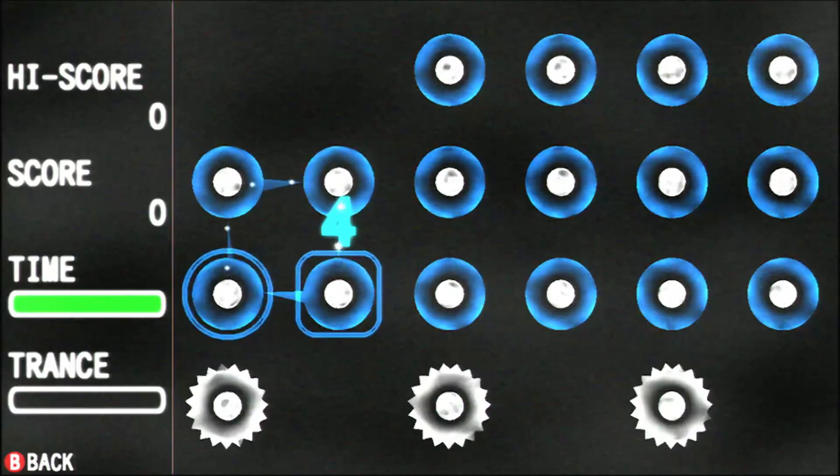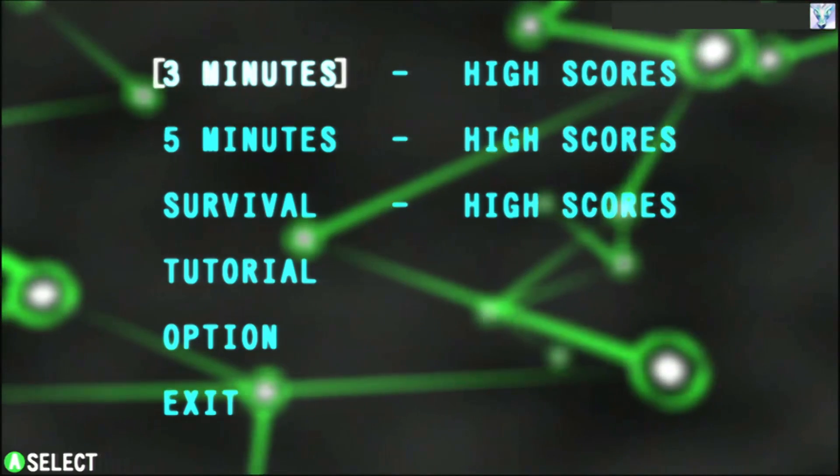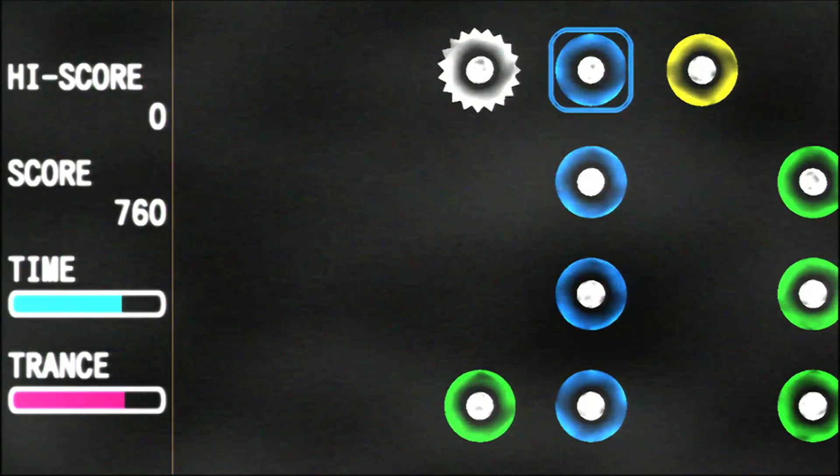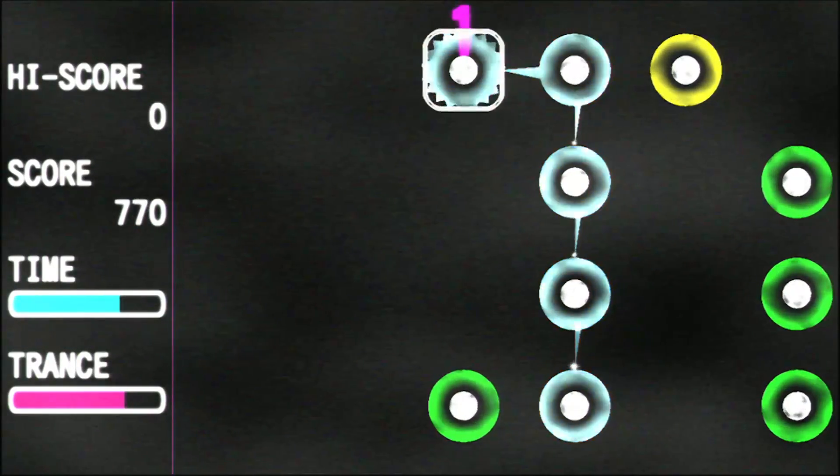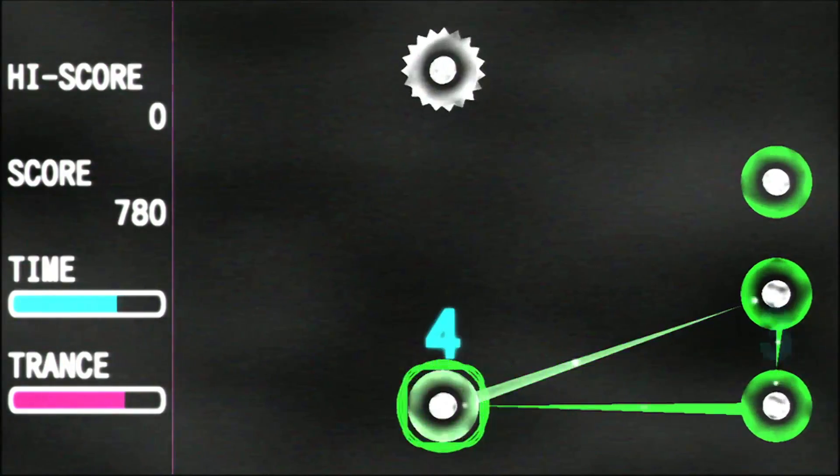There are three game modes: timed 3- and 5-minute challenges, and a survival mode where completing links awards more time. Using either a cursor or a free-floating pointer, you draw sequential connections between neurons of the same color. The more connections you draw, the more points that cluster will eventually be worth.